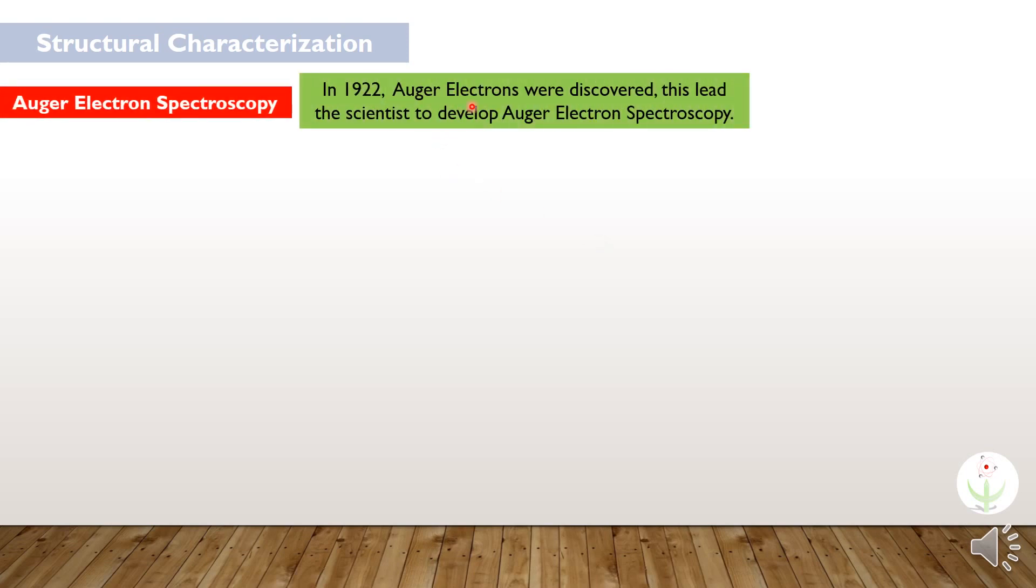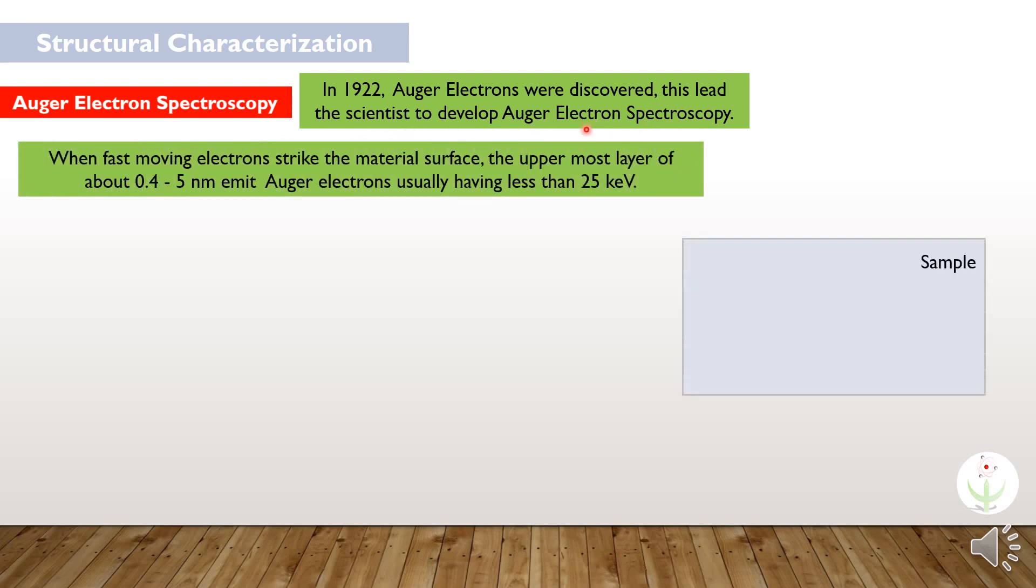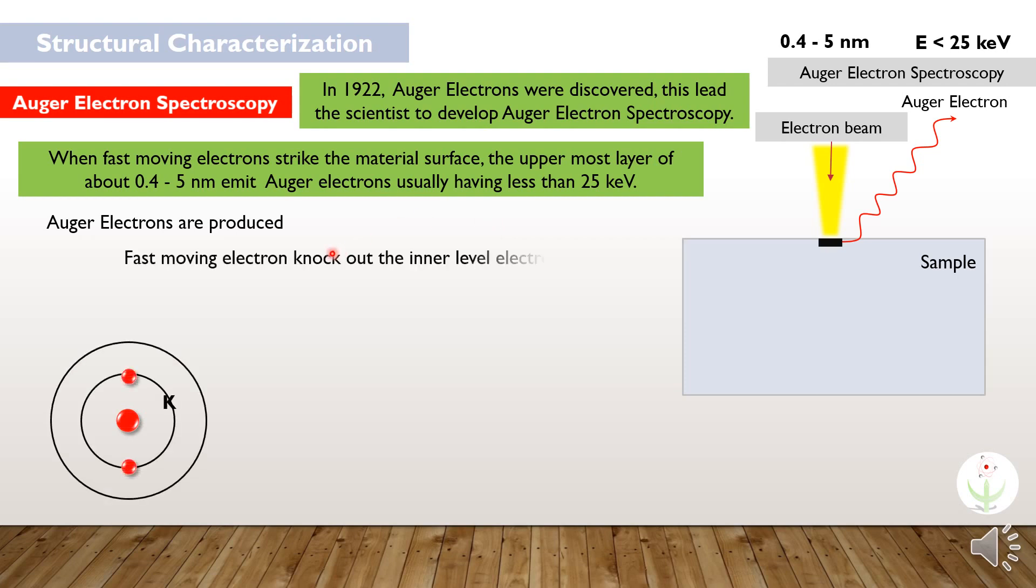Discovery of electrons led the scientists to develop the latest spectroscopy and microscopy techniques by understanding the behavior of electrons when they interact with materials. In 1922, Auger electrons were discovered. This led the scientists to develop Auger electron spectroscopy. They are produced when a fast-moving electron strikes the material surface, the uppermost layer of about 0.4 to 5 nanometers, emitting other electrons having less than 25 kV of energy.